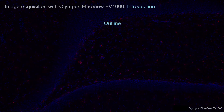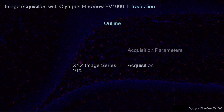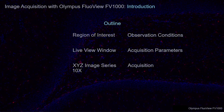By the end of this video series, we will have covered how to acquire an XYZ image series at 10x magnification. To do this, we will walk through how to adjust the acquisition parameters by using the Live View window. To get started, we will prepare the observation conditions in order to locate a region of interest containing IBA1 positive cells in a 50 micrometer thick slice of rat dentate gyrus using Hoechst Counterstain.